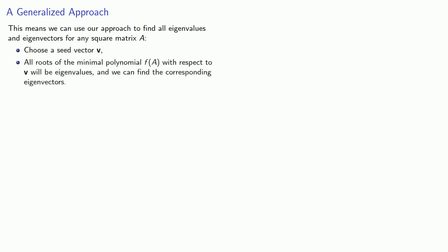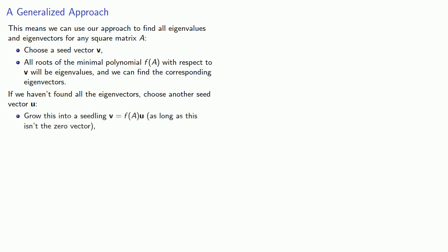This means we can use our approach to find all eigenvalues and eigenvectors for a square matrix A. We'll choose a seed vector; all roots of the minimal polynomial with respect to v will be eigenvalues, and we can find the corresponding eigenvectors. If we haven't found all the eigenvectors, choose another seed vector u and grow it into a seedling. As long as our seedlings don't die out — as long as this isn't the zero vector — we can find the minimal polynomial with respect to v and repeat the process.